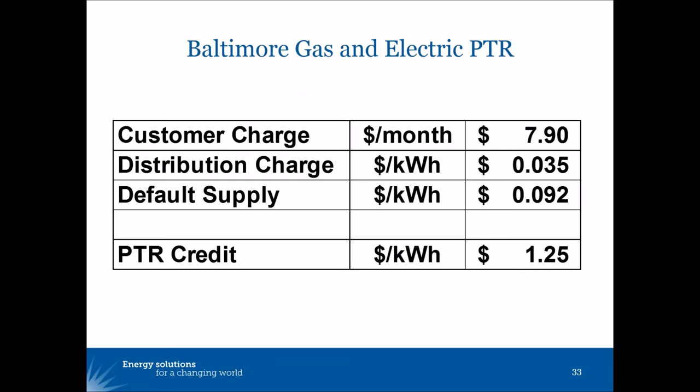So it's ten times what they would normally pay for a kilowatt hour — they can get that as a credit for reducing a kilowatt hour during these critical events. This is called the BG&E Smart Energy Rewards Program. Unlike the examples of a critical peak pricing plan, the customer's energy charges don't go up during the critical peak, so customers that participate can save money. And those that don't don't pay anything more than they otherwise would have.